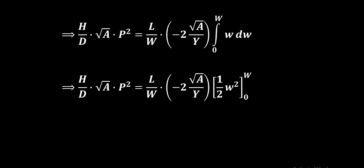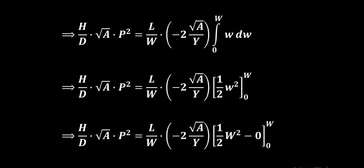Hence we have H by D into root A into P square equal to L by W into minus 2 root A by Y. If we put capital W and 0 respectively in place of small W, so we get half of W square minus 0.